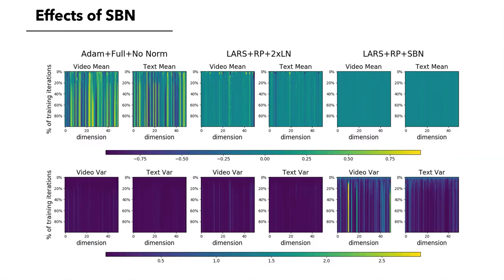Next, we examine the mean and variance distributions of the features provided by the video and text stacks. Under SBN, the means are very close to zero, but the variances are much higher than the other versions. This suggests that the features are more informative under SBN because they change more for different inputs.